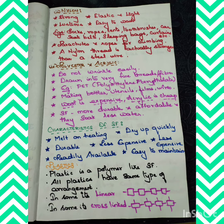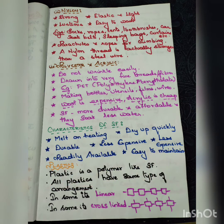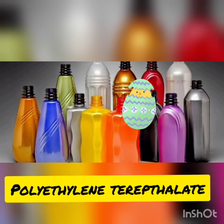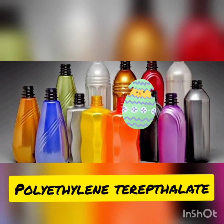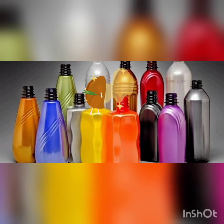Now we will see polyester and acrylic. Polyester is another synthetic fiber. Polyester is very crisp, easy to wash, and resists wrinkling. It is used for making bottles, utensils, films, wires, and other products. As the name indicates, polyester means many esters — just like many glucose units form cellulose, many ester units form polyester.